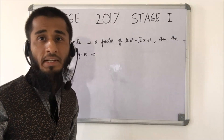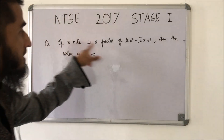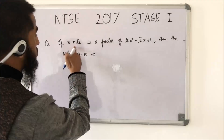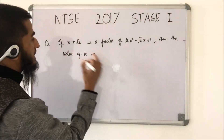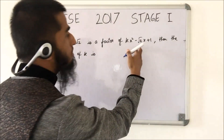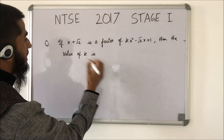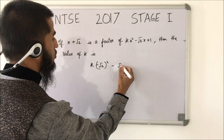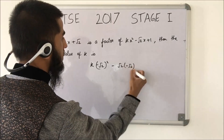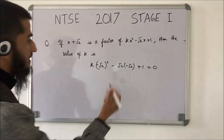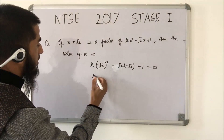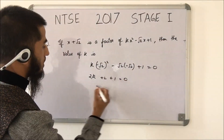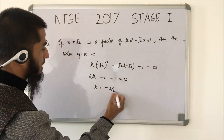A very easy question was asked in NTSE 2017. If x plus root 2 is the factor of this expression, then we need to find out the value of k. If x plus root 2 is a factor, it means x equal to minus root 2 will make this expression 0. So if we put x = minus root 2, we get k(minus root 2)² minus root 2 · (minus root 2) + 1 = 0. Simplifying: 2k + 2 + 1 = 0, so k is equal to minus 3 by 2.